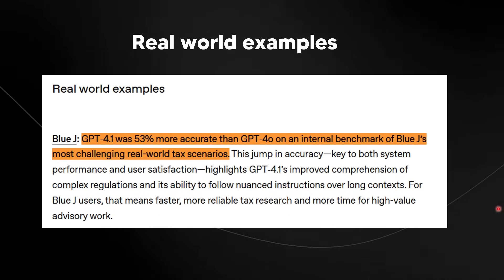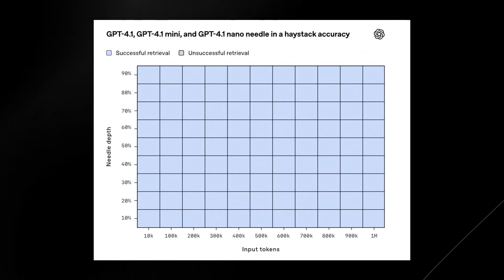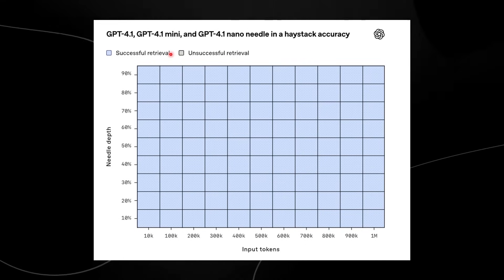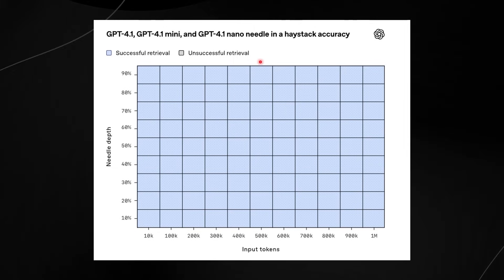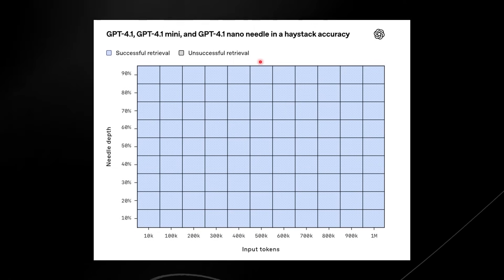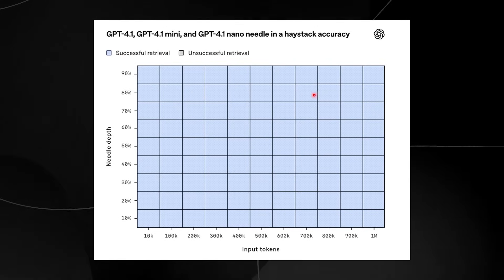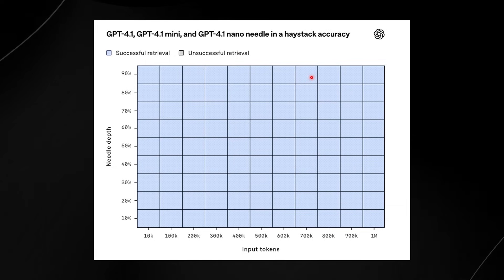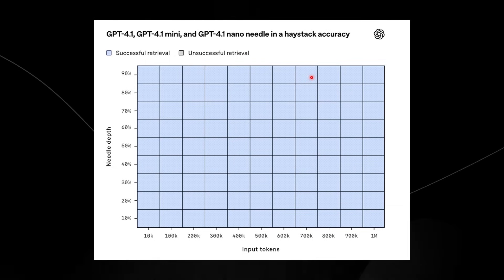GPT-4.1 has an extremely long context window, which is remarkably important in real-world use cases because we often have to reason over long documents. They performed the needle-in-a-haystack accuracy test — looking at 1 million tokens, placing a small phrase inside, and asking the model to retrieve it. GPT-4.1 achieves nearly 100% retrieval accuracy over 1 million token context length. For reference, 1 million tokens is more than eight copies of the entire React codebase.